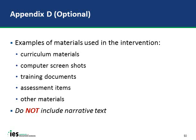Appendix D contains materials related to the education intervention being evaluated—for example, curriculum materials, assessment materials, computer screenshots if it's an online program, or professional development documents. The difference between Appendix C and Appendix D is that Appendix C contains information regarding the evaluation you are doing, while Appendix D addresses materials for the intervention you are evaluating.